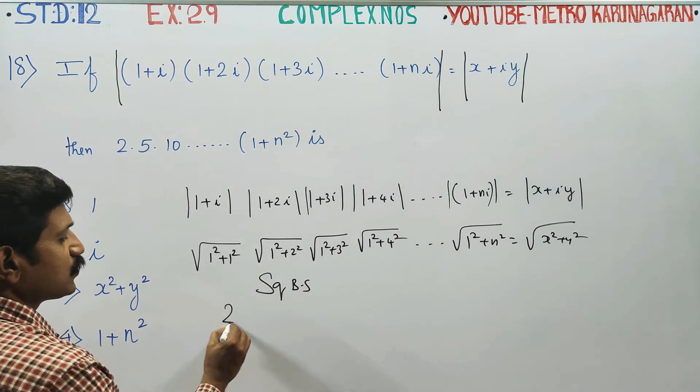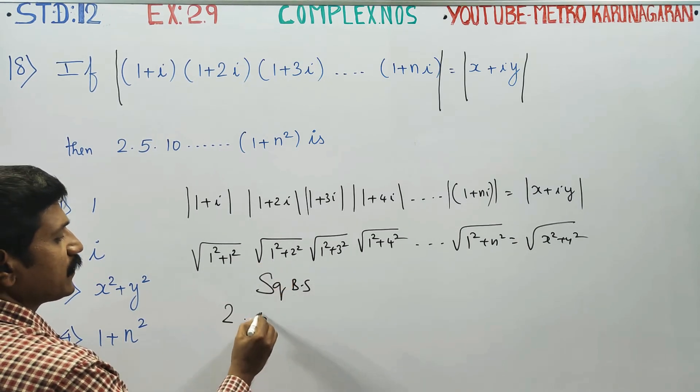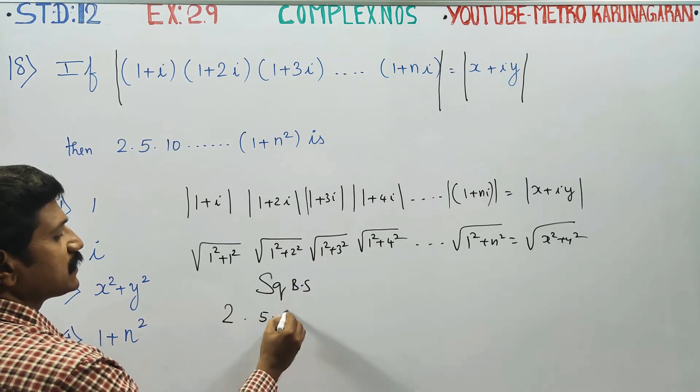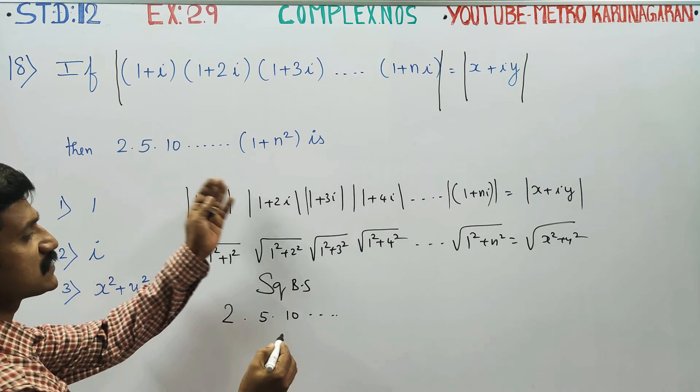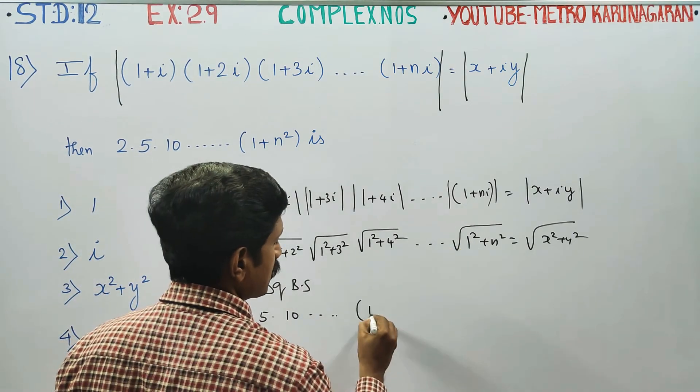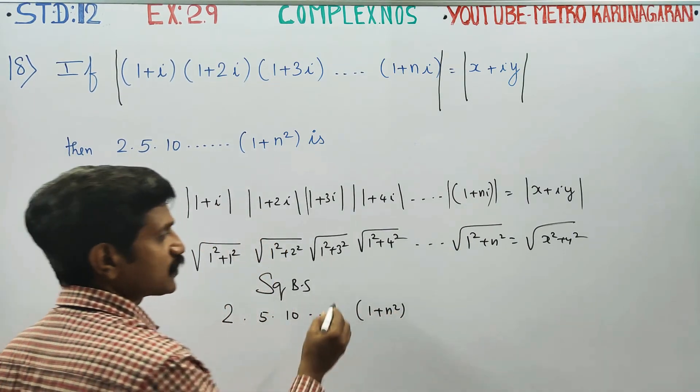1 square plus 1 square, 2 goes to 5. 9 plus 1, 10 goes to 10, dot dot dot. One square is 1, n square.